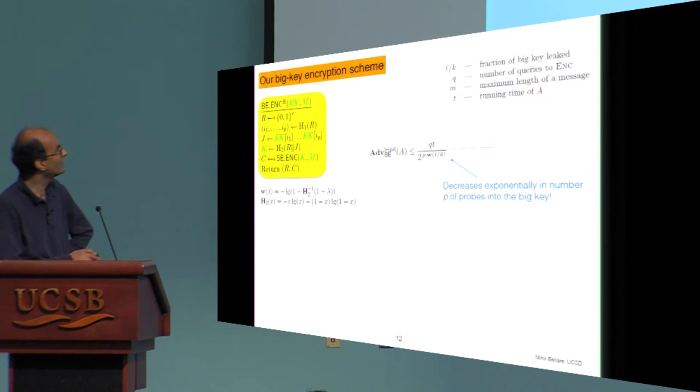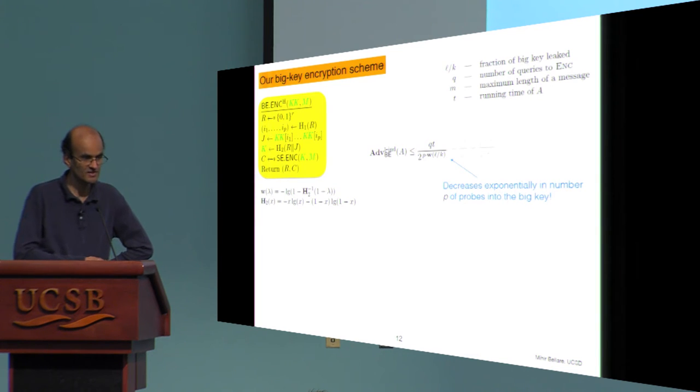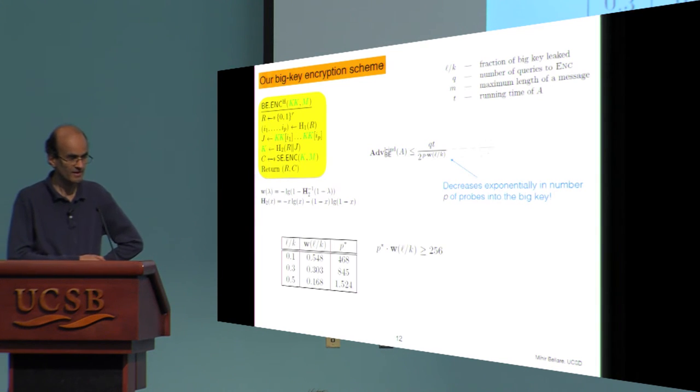These functions are fairly complex. So you start from the binary entropy function. This w is some kind of inverse of it and that's applied to the fraction of bits that are leaked. It's kind of hard to get a sense of these functions from the formulas, but we might plug in some numbers in the following way. Let's say we want the exponent in that denominator to be 256, which would be reasonable security there. And we have decided on some amount of fraction of leakage we want to tolerate, then we can ask how many probes would it take for that to become true.